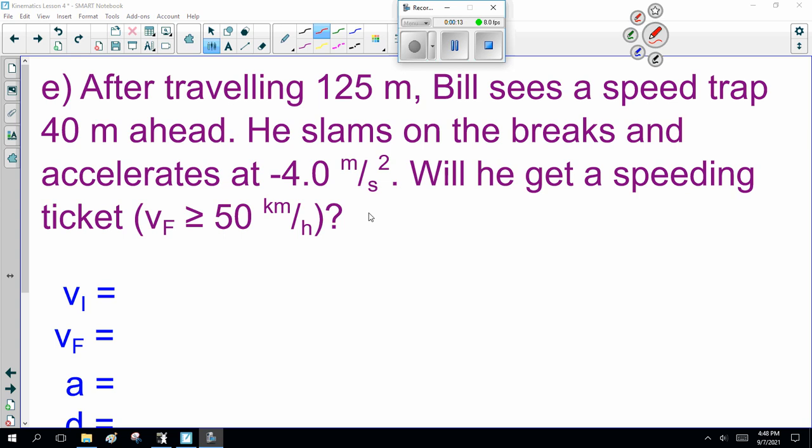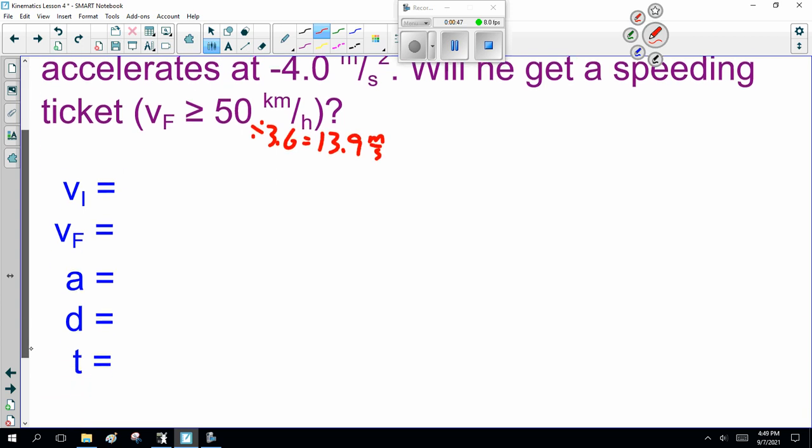So this is my favorite trick question, Question E. After traveling 125 meters, Bill sees a speed trap 40 meters ahead. He slams on the brakes and accelerates at -4.0 m/s². Will he get a speeding ticket? V_F less than or equal to 50 km/h. Divide by 3.6, that's 13.9 m/s. So he has to be going less than 13.9 m/s when he passes by the policeman.